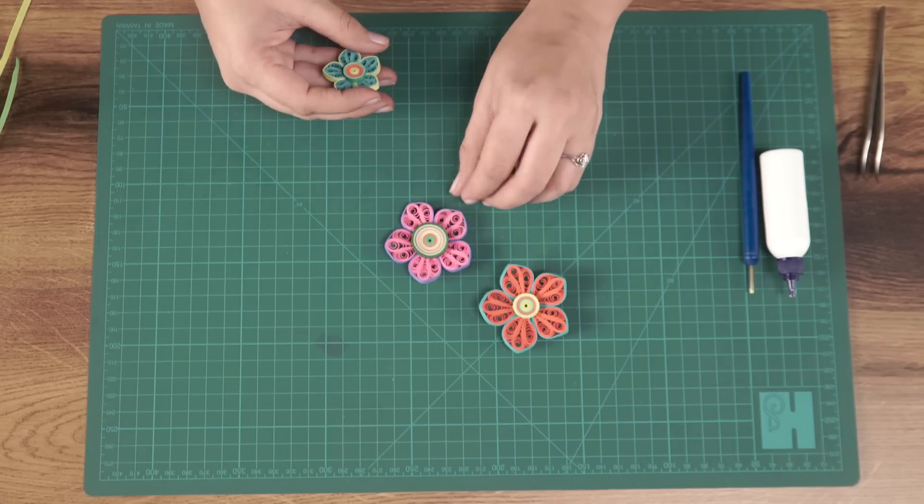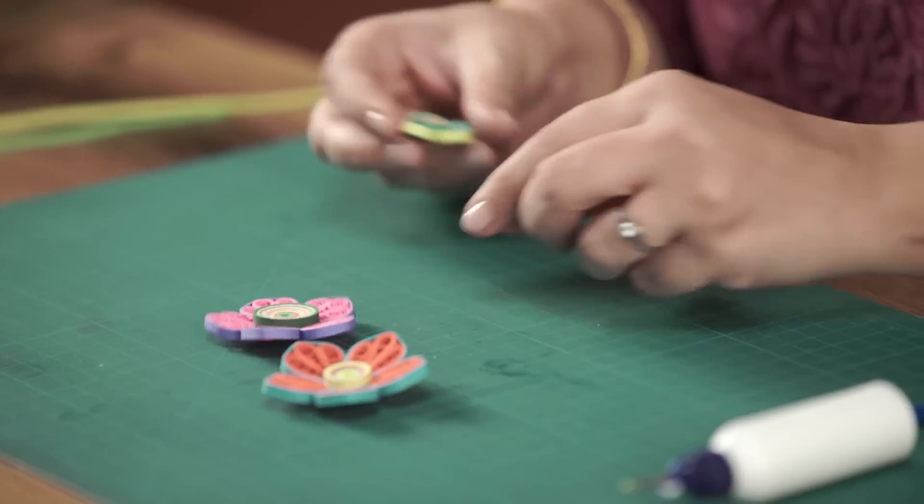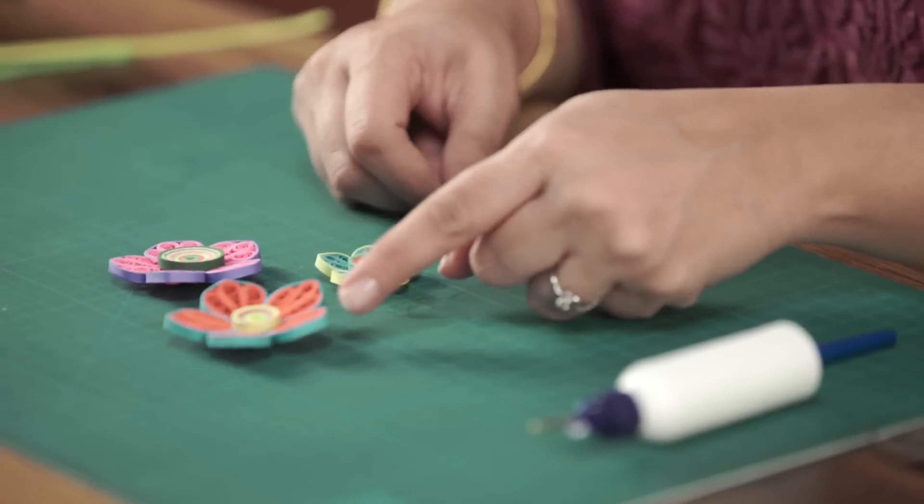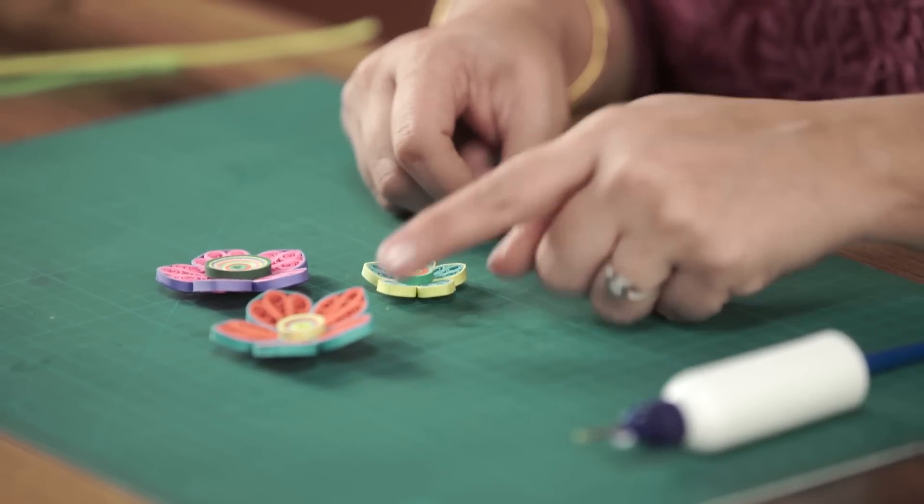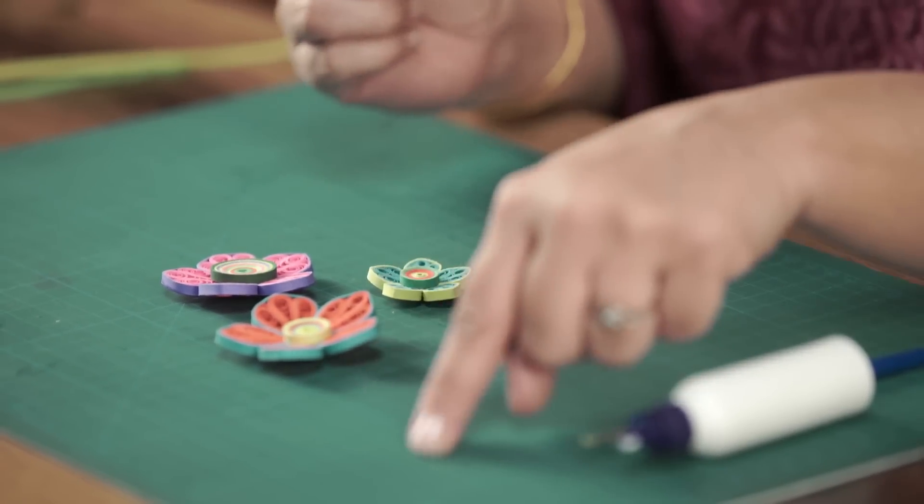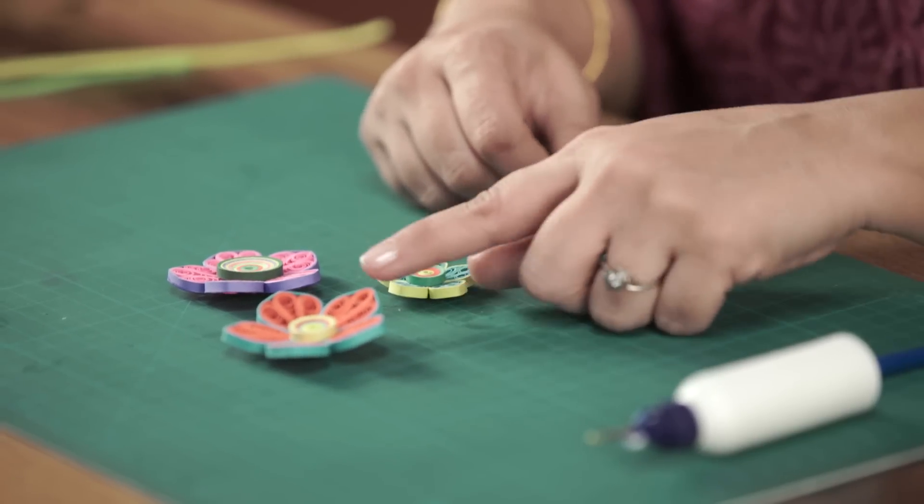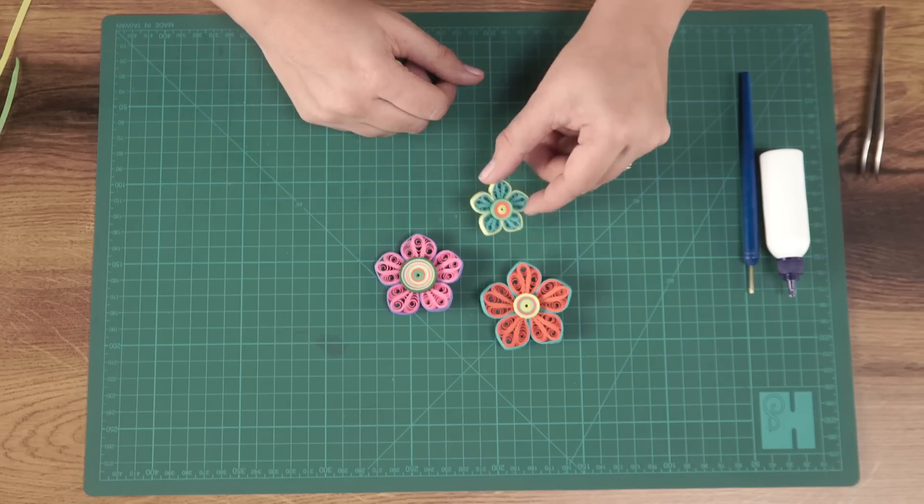You can make smaller flowers too, just with half a strip of paper. Don't use the entire A4 length of the strip, use half of it, and this is how it will look.